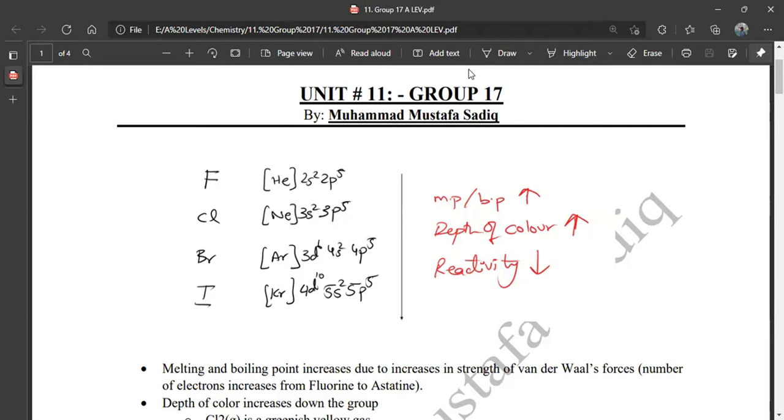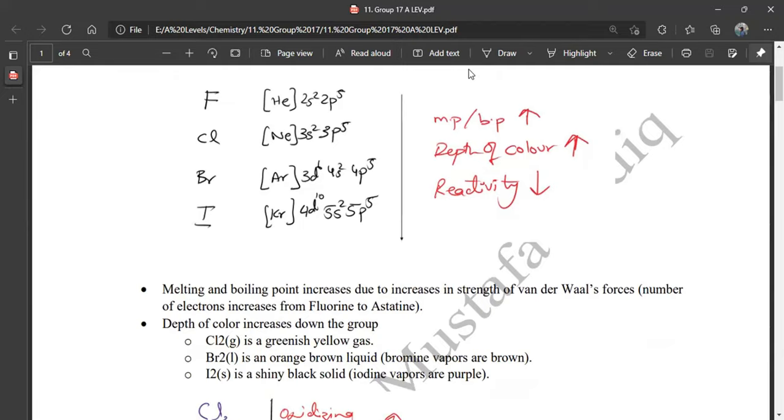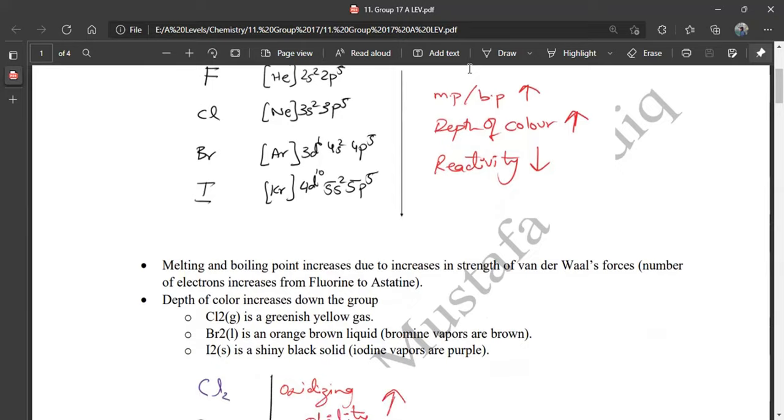The melting point and boiling point increase, the depth of color also increases, and reactivity decreases. The melting and boiling point increases due to increase in strength of Van der Waals forces. The depth of color increases down the group.